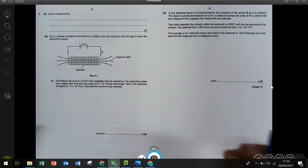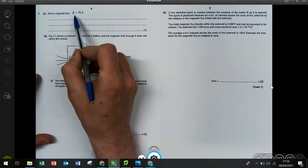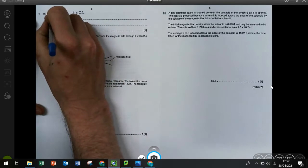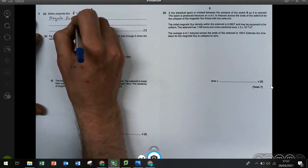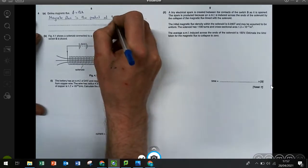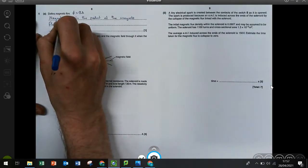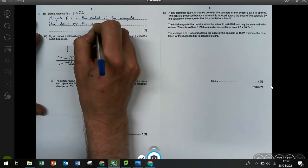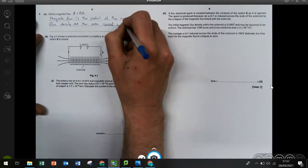So magnetic flux is given this symbol and is related to this formula, which you can find on a formula sheet. What does it actually mean? Because you wouldn't just get marks for this. Magnetic flux is the product of the magnetic flux density and the area normal to the field.